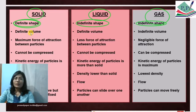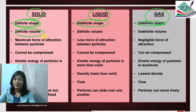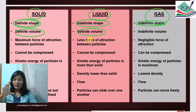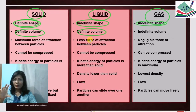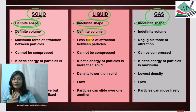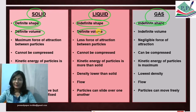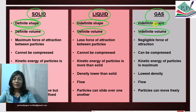The second property is volume. Solid has a definite volume which never changes — for example, a table, chair, book, or mobile phone. Liquid also has a definite volume. For example, if you have a glass of water and pour it into another utensil, the shape changes but the volume does not. This is a very important point: liquid's shape changes but volume does not change.